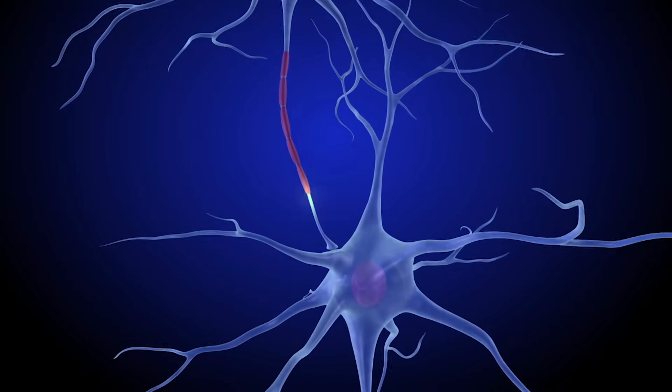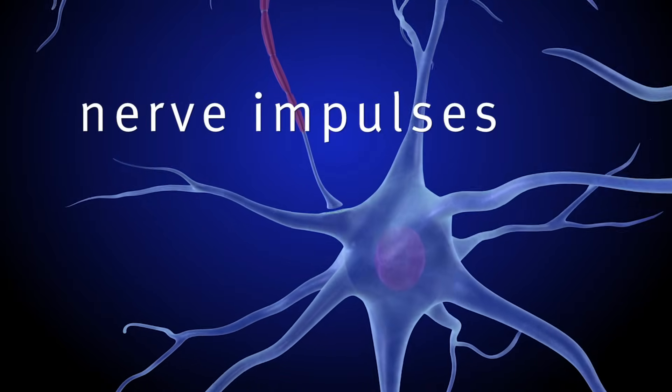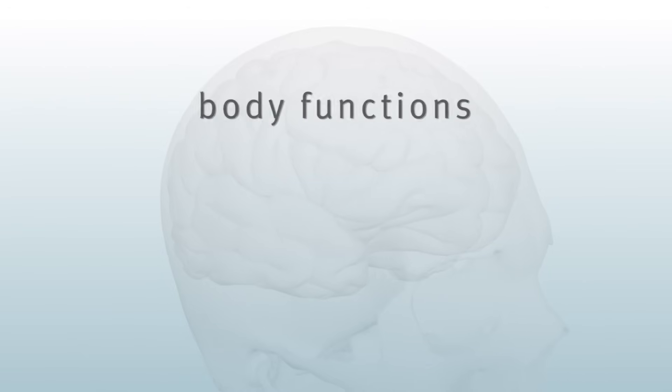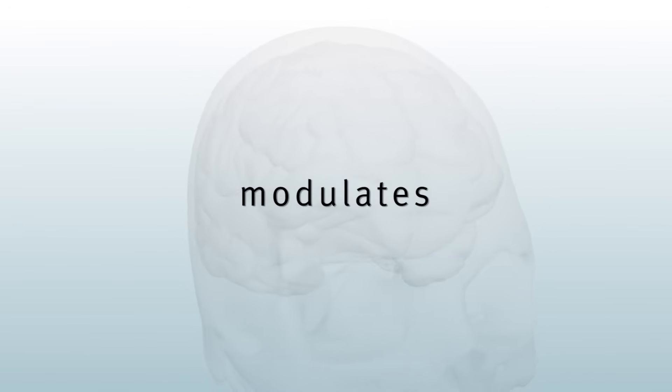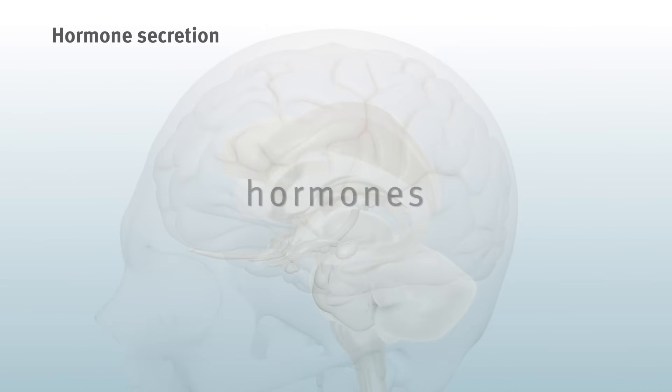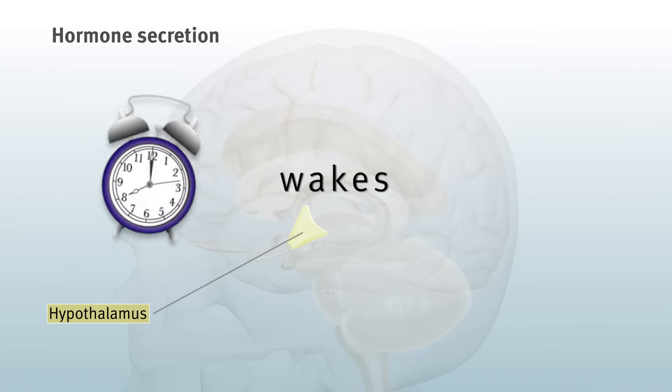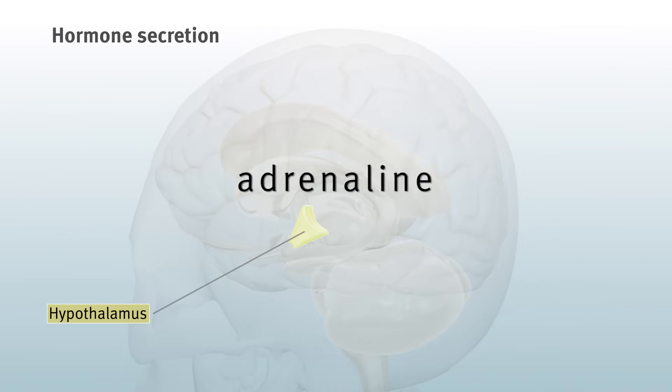The brain controls many actions through rapid nerve impulses, but there are some body functions that the brain modulates over many hours or days by secreting hormones via special glands like the hypothalamus, which wakes you up in the morning and gets the adrenaline flowing, like during a test or athletic event.